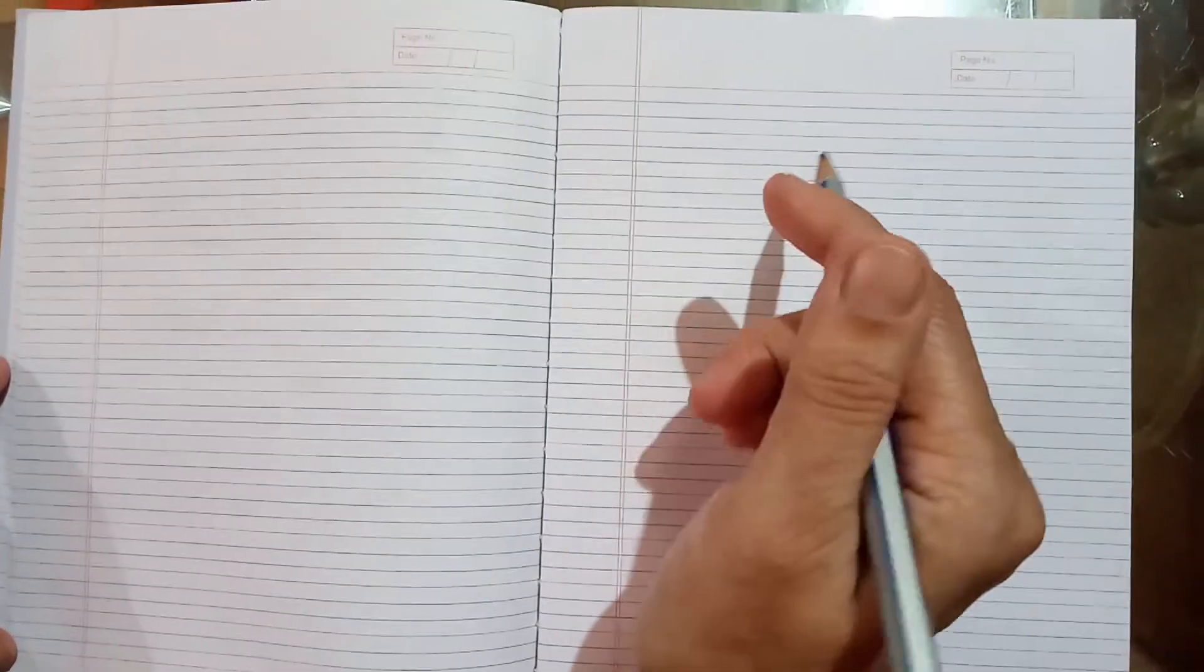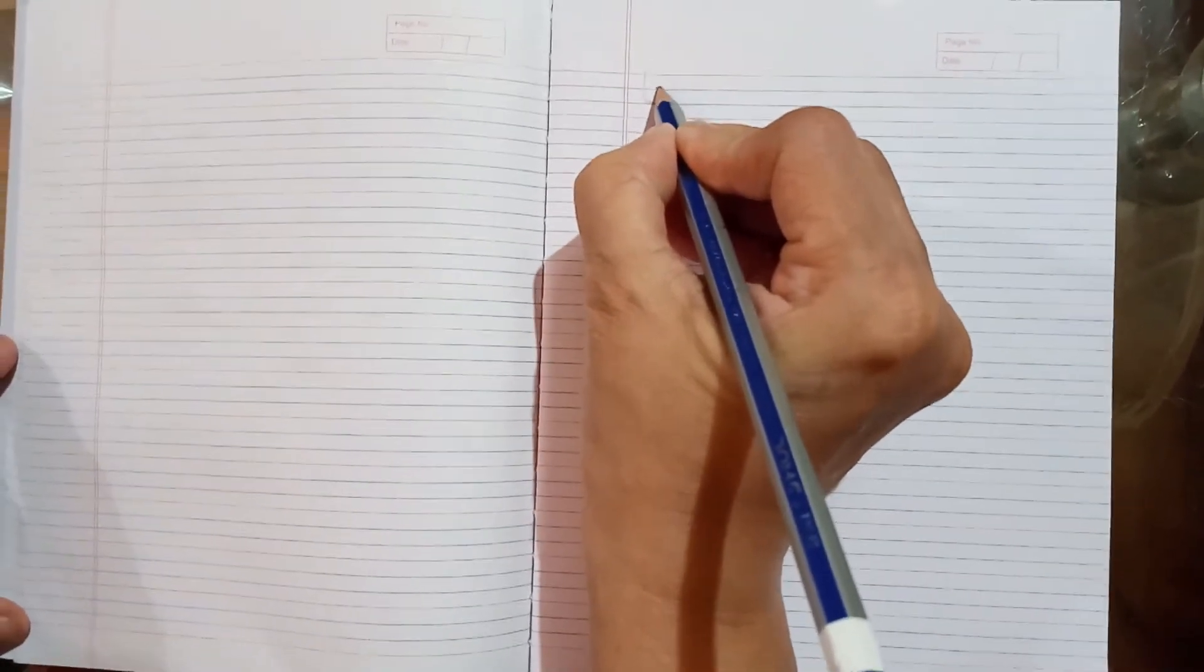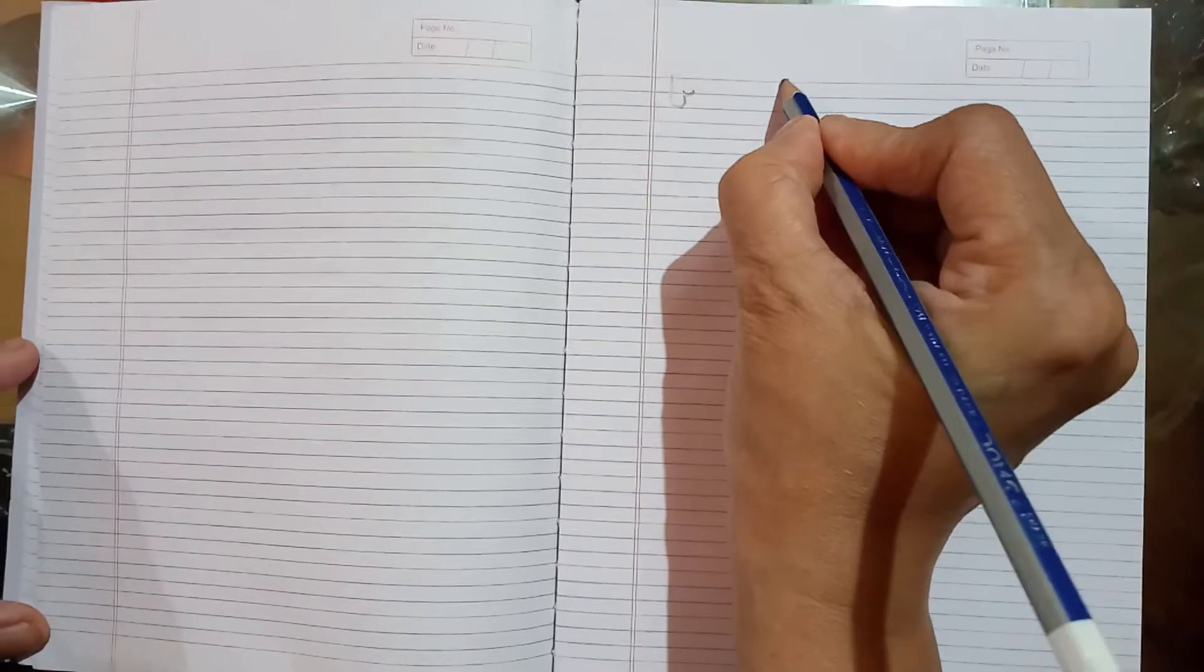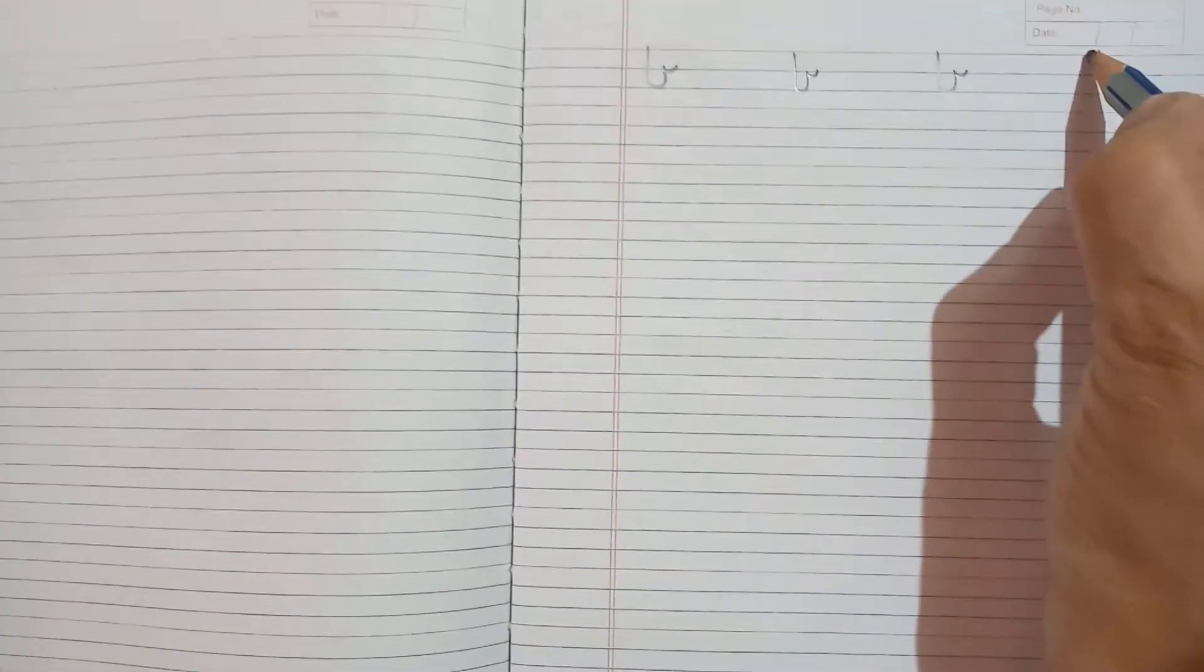And in book number three, on the right hand side page, we will start by writing small letter b. Now you have seen how we write small letter b: a standing line from the red line, curve at the blue line, go up and a small jump.